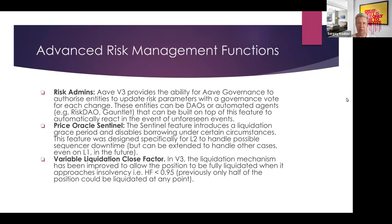So-called automated agents — for example, the risk analysis provider Gauntlet — can be voted in via governance to manage risk parameters. They have their own keys and manage it independently, without Aave itself. Additionally, the variable liquidation close factor has changed: previously liquidation was capped at 50% of collateral; now it can go up to 95%.